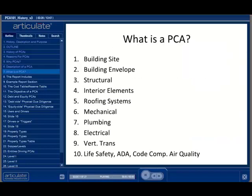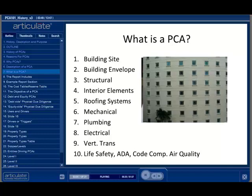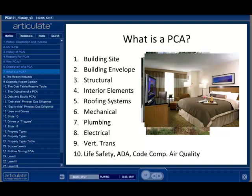Now that we have covered a little background, let's get into some detail. The purpose of the PCA is to identify physical deficiencies with the subject property. To systematically evaluate the deficiencies that may exist, a number of areas are evaluated. For the building site, drainage, retaining walls, paving, curbing, and parking are evaluated. For the building envelope, the exterior walls and windows are examined. The structural foundation and framing is also considered. For interior elements, the units, rooms, common areas, and other interior features are examined.